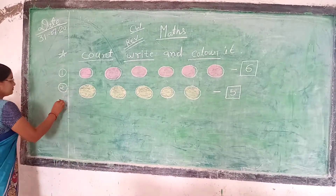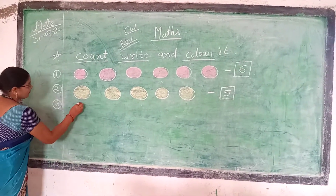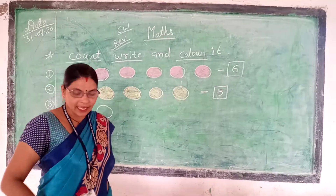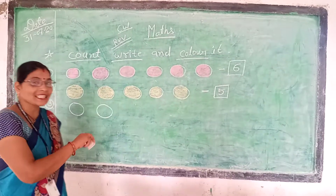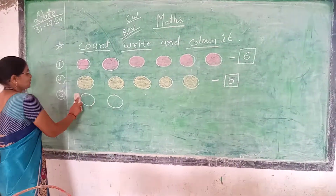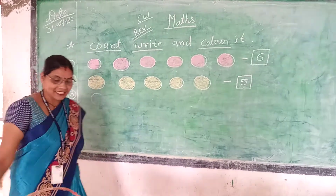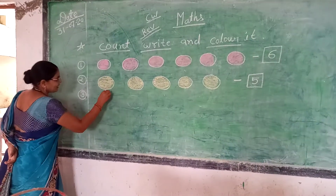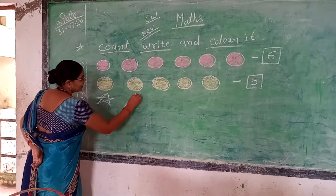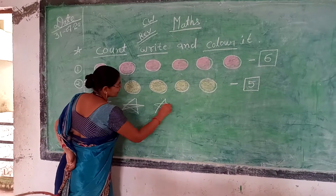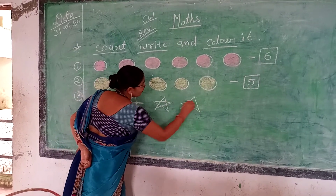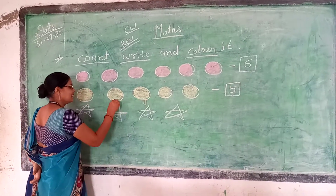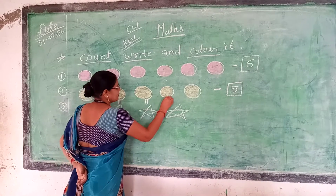One, two, three, four, five. One circle, two circles, three circles, four circles. How many circles? Four circles. Yes.